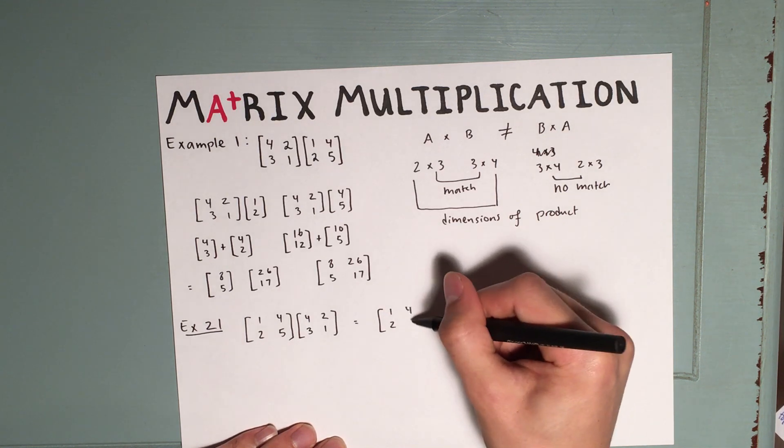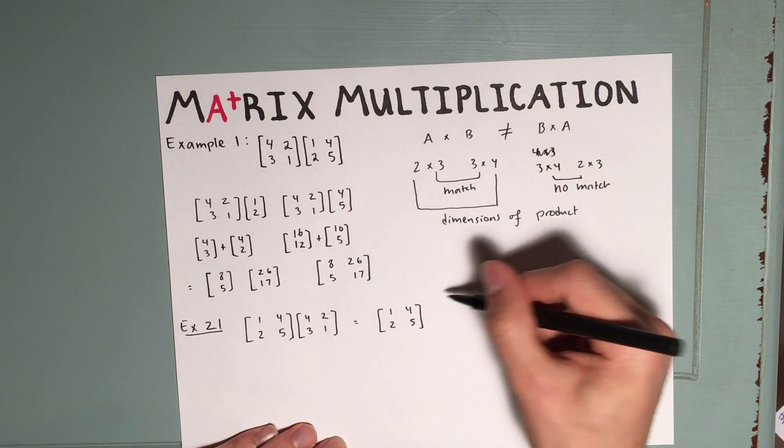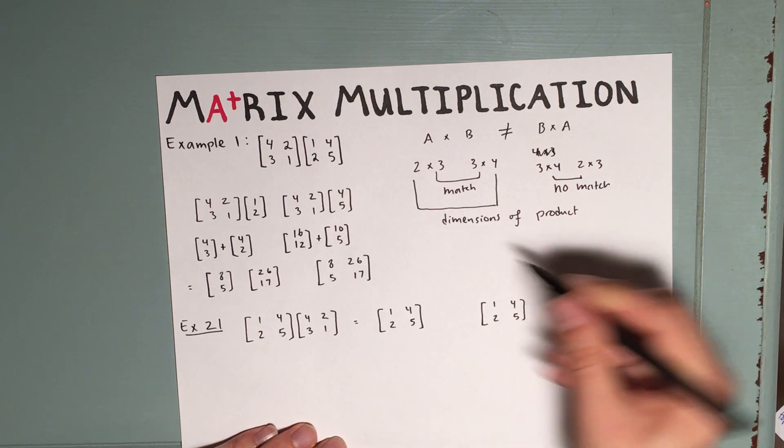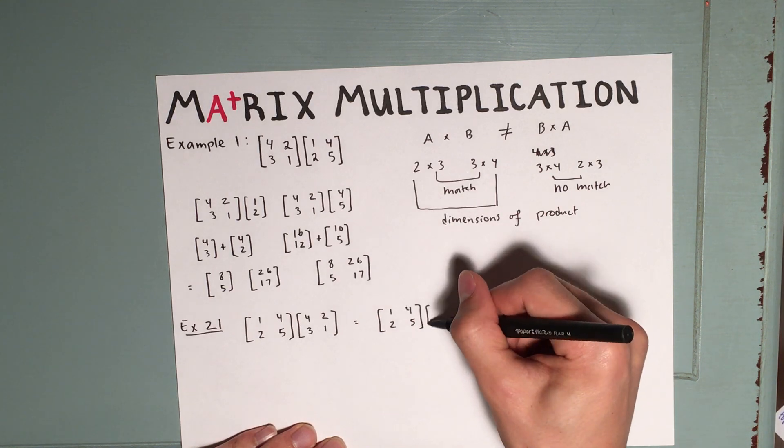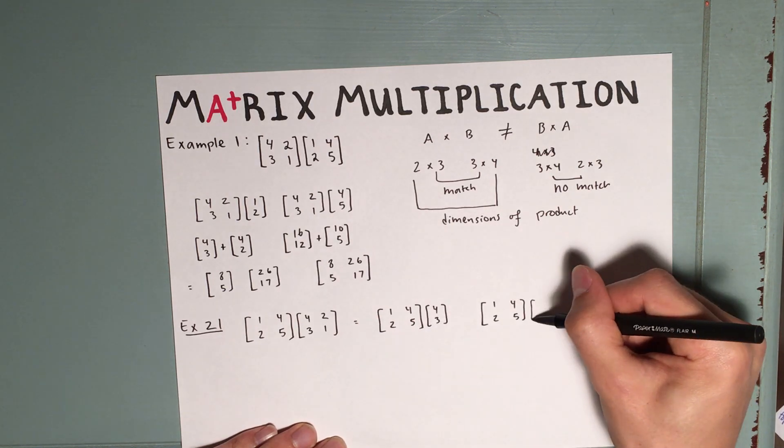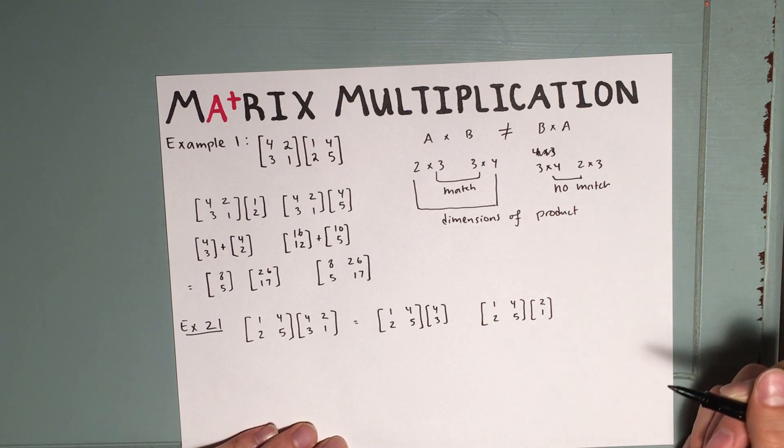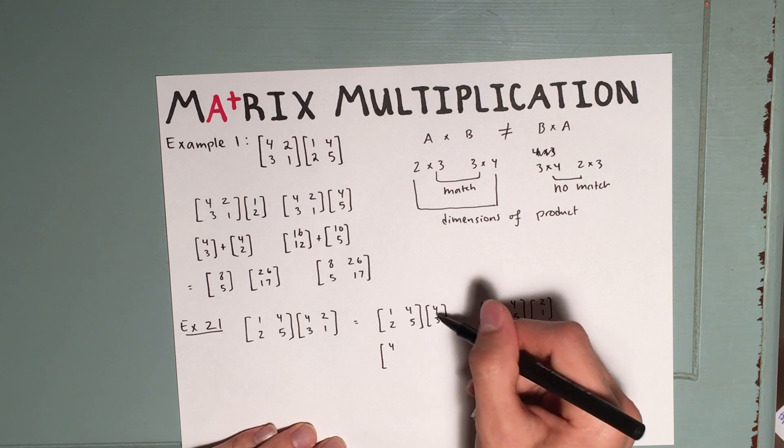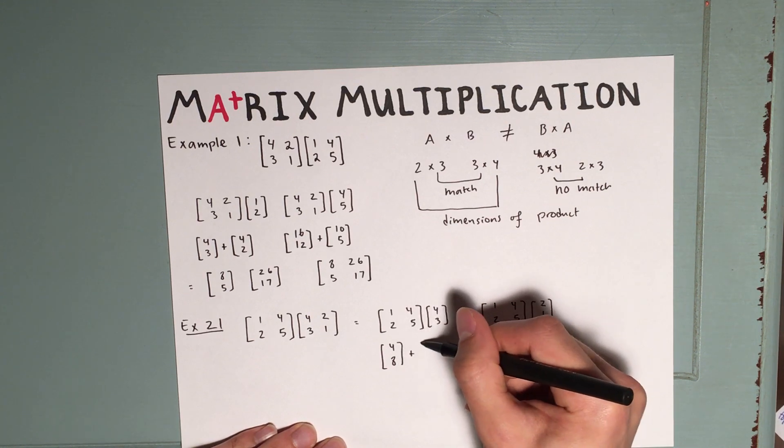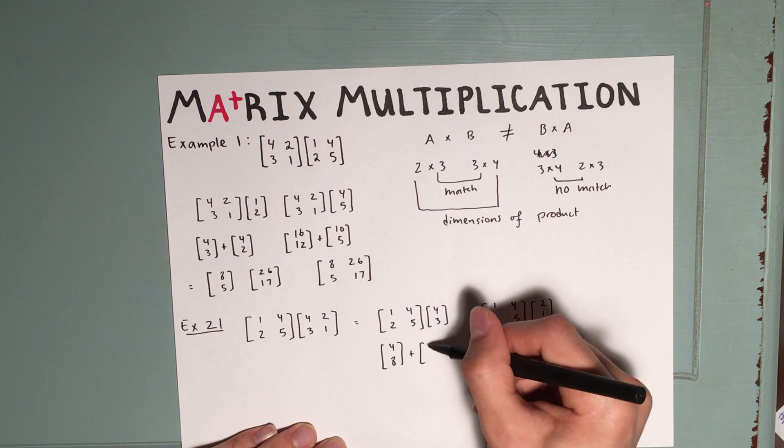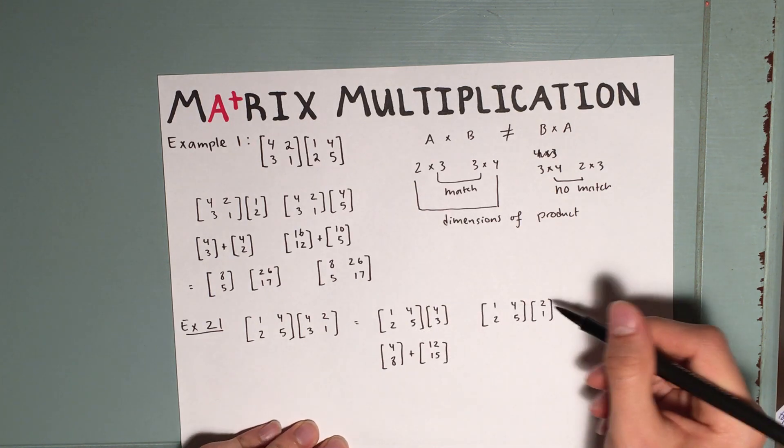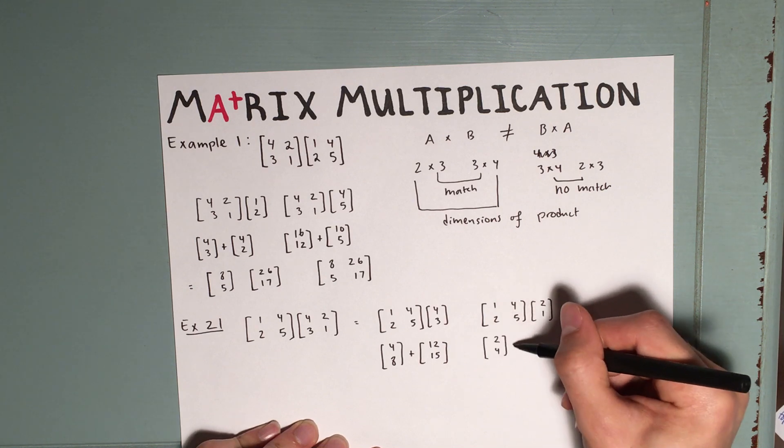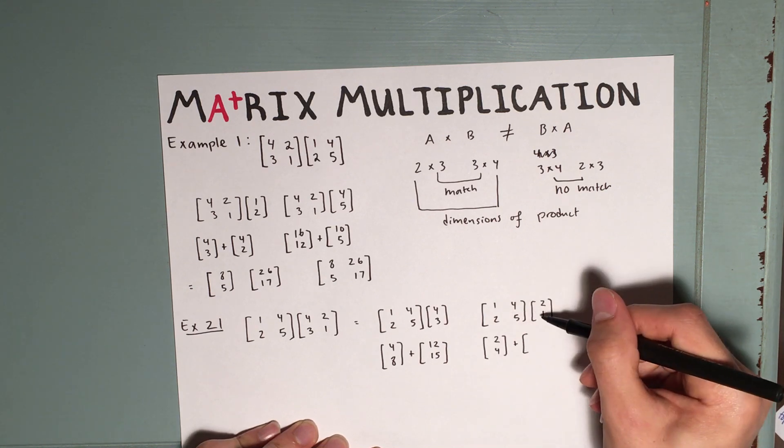So again, we write down the first matrix twice. And each column of the second matrix. Now we distribute like before. So that's going to be 4 times 1 and 4 times 2, and 12 and 15. Over here, we have 2 times 1, 2 times 2, added to 1 times 4 and 1 times 5.